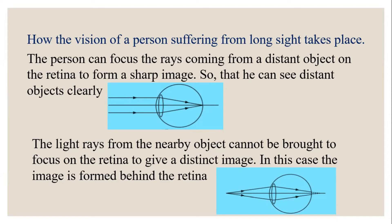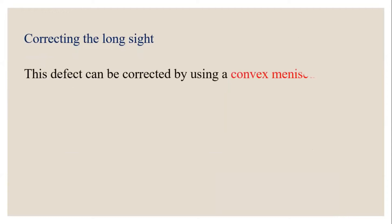Another reason is that to see nearby objects, the curvature of the eye lens should increase, but this eye lens has no ability to increase its curvature. This defect can be corrected by using a convex meniscus lens.